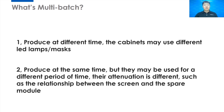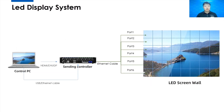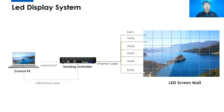Regarding the system structure for multi-batch adjustment: the control PC provides the video source and control signal to the sending card, and the sending card directly uses an internet cable to drive the screen. Importantly, there are no video processors in this setup. Before starting multi-batch adjustment, make sure you remove all video processing devices, otherwise it may cause problems.